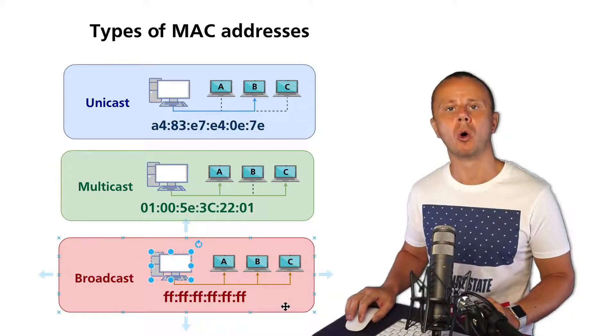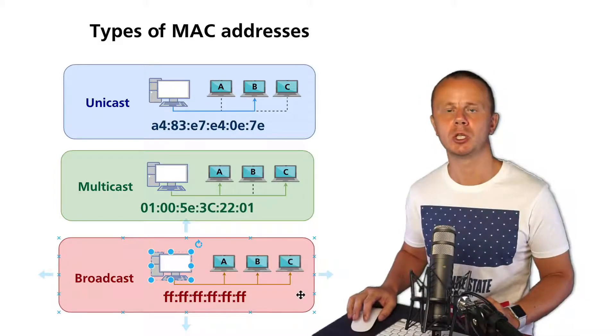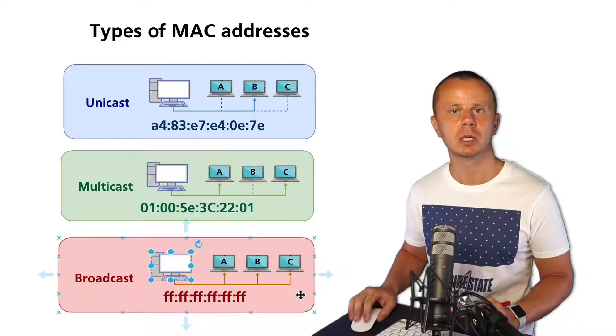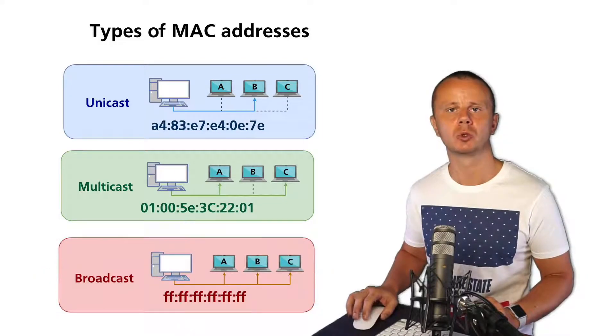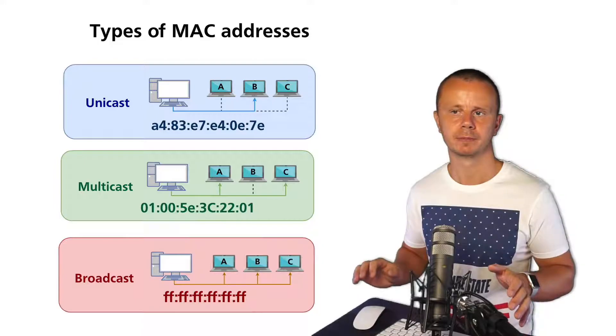The broadcast MAC address is used as destination MAC address in the frame when some device wants to send the frame to all devices in the same switched network, and switches will forward such frames to all ports.